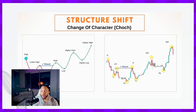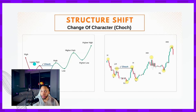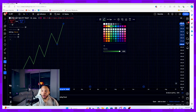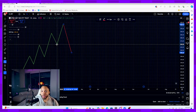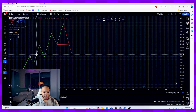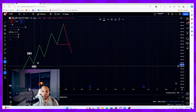A change of character occurs like this: let's say we're in a bearish market seeing lower lows and lower highs, and then suddenly we spike back up and create a higher high. That candlestick makes a movement above the most recent lower high, which creates a change of character — write that down, that's free game.